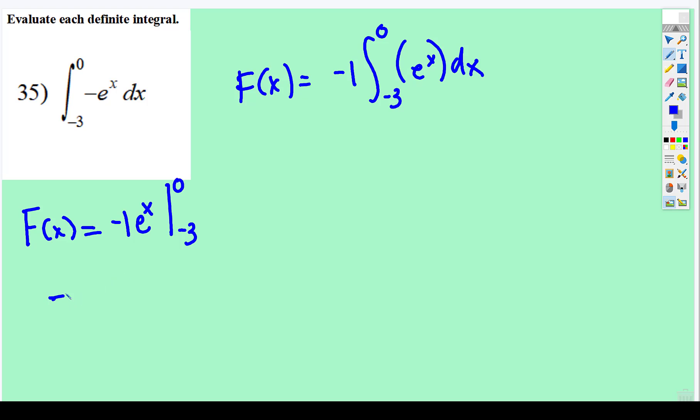So it's negative 1 times F(0) subtract F(-3).